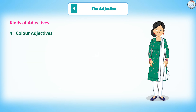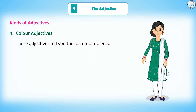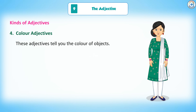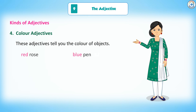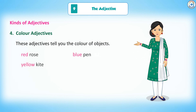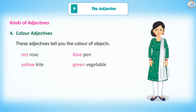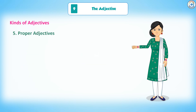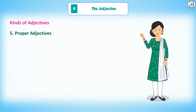4. Color adjectives: These adjectives tell you the color of objects. Examples: red rose, blue pen, yellow kite, green vegetable.